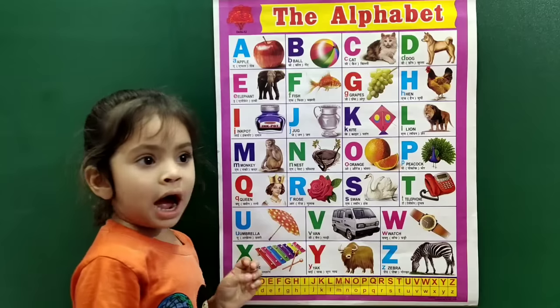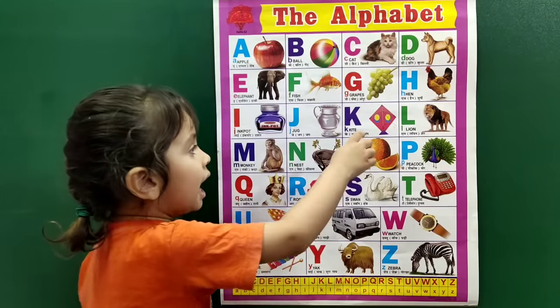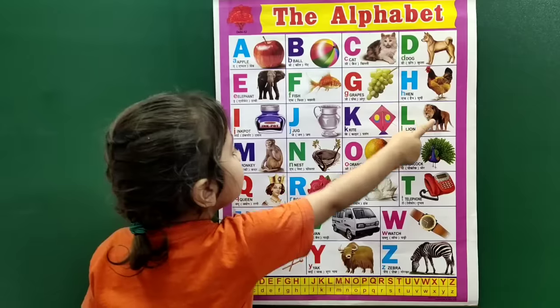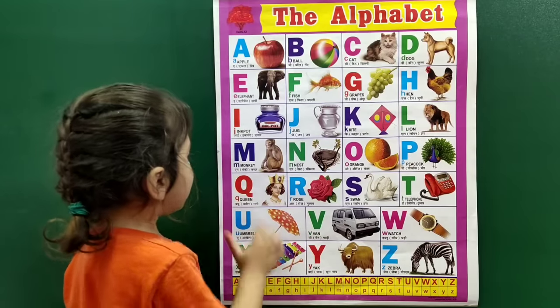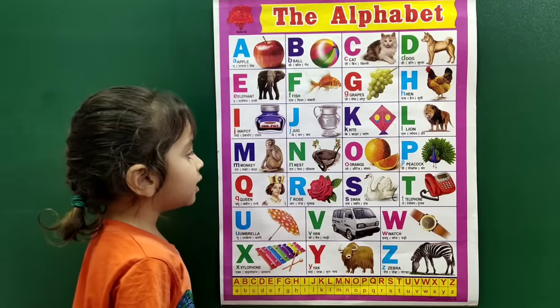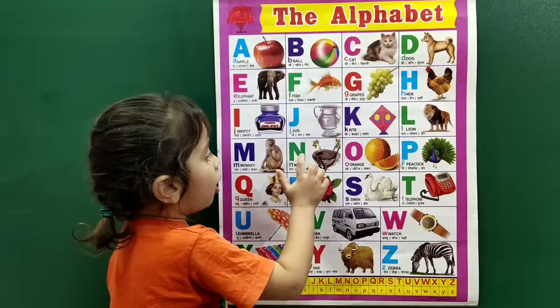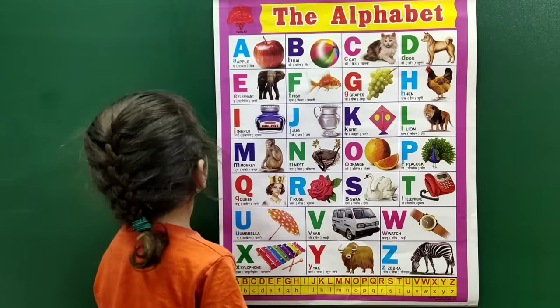K for kite, L for lion, M for monkey, N for nest.